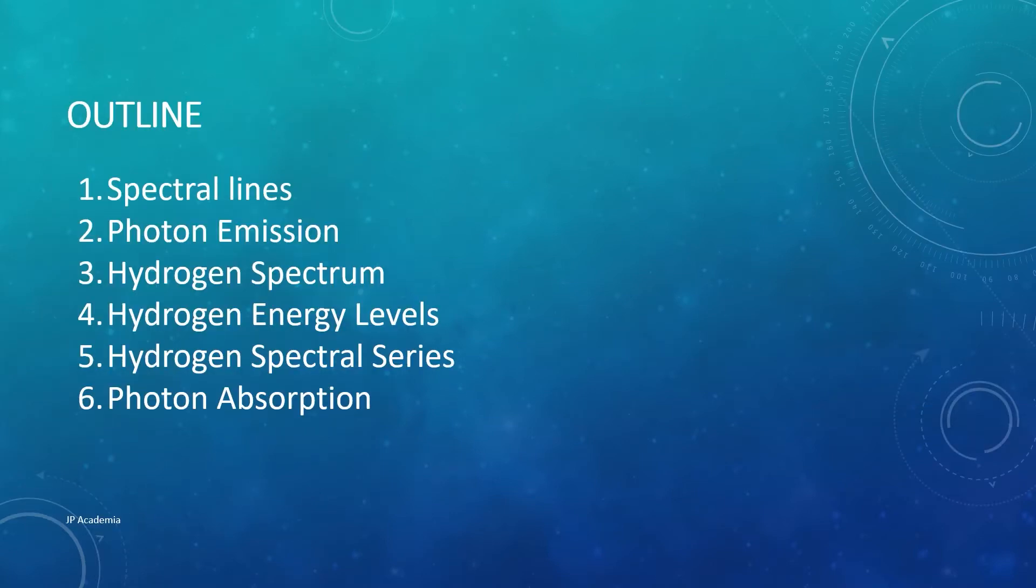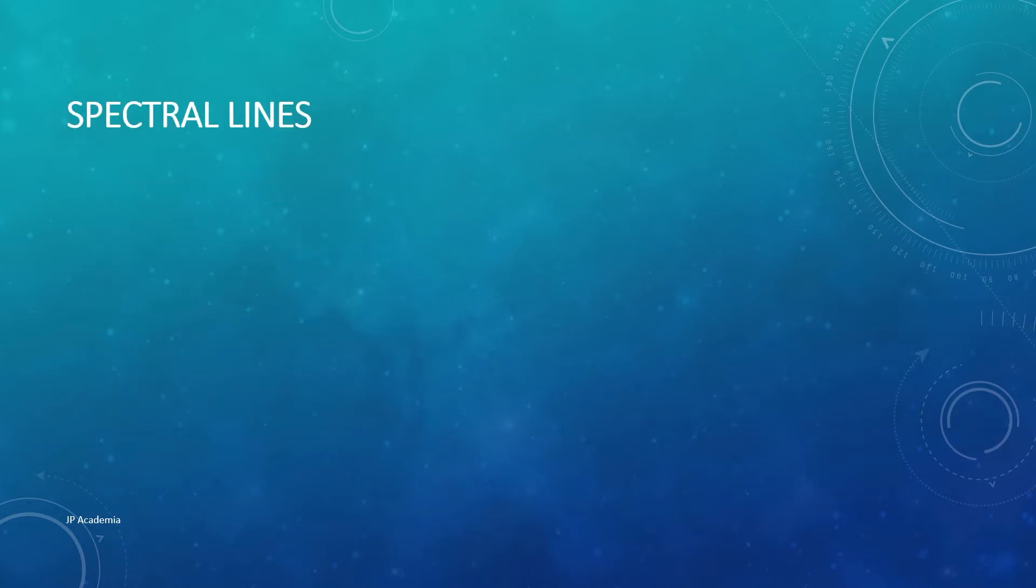This is the outline of this video lecture. The origin of spectral lines for atoms was understood because of first, the concept of photons, and second, the concept of atomic energy levels.